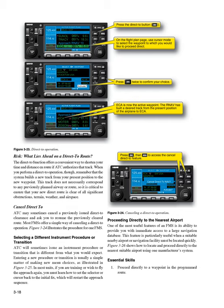Selecting a different instrument procedure or transition: ATC will sometimes issue an instrument procedure or transition that is different from what you would expect. Entering a new procedure or transition is usually a simple matter of making new menu choices, as illustrated in Figure 3-25. In most units, if you are training or wish to fly the approach again, you must learn how to set the selector or cursor back to the initial fix, which will restart the approach.